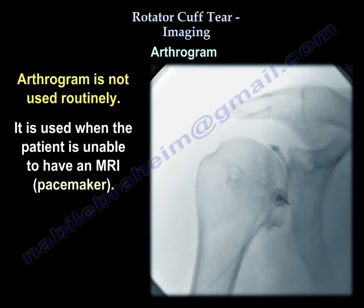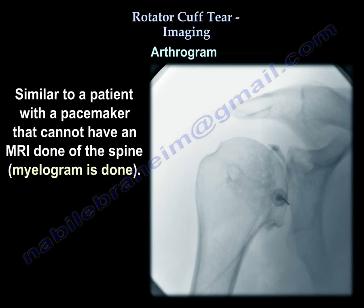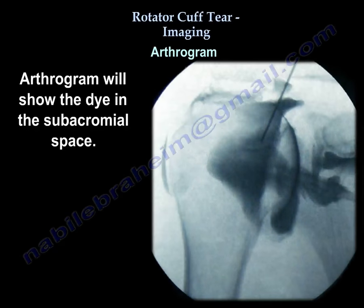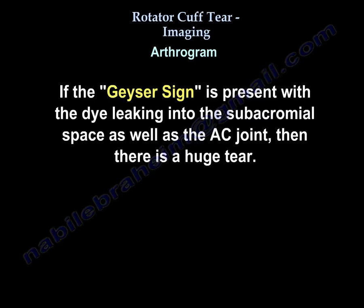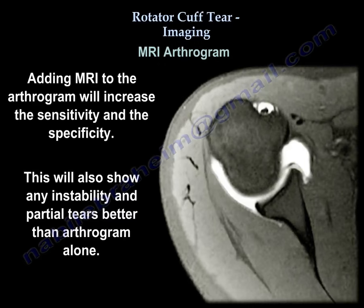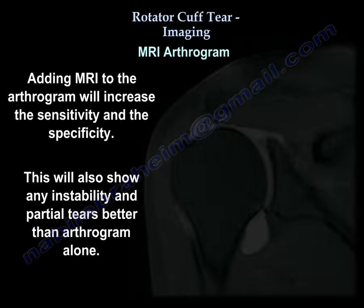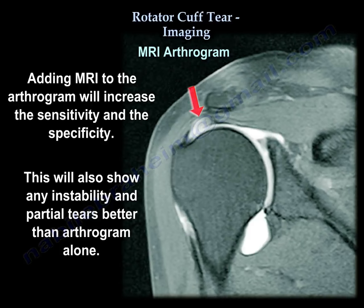Arthrogram is not used routinely, but you will use it if you are unable to do an MRI — for example, if somebody has a pacemaker. Similarly, if the patient has a pacemaker and you can't do an MRI of the spine, you get a myelogram. Arthrogram will show extravasation of the dye into the subacromial space. The geyser sign means the dye leaks into the subacromial space and the AC joint, indicating a massive tear. Adding MRI to the arthrogram will increase sensitivity and specificity, and may show partial tears better.